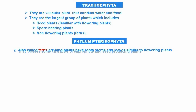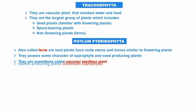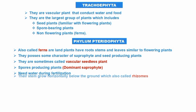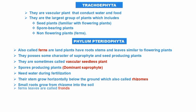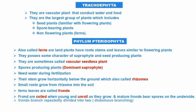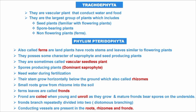The first subgroup is Pterophyta, also called ferns. Ferns are land plants with a root system and leaves similar to flowering plants. They possess some characteristics of sporophytes but are vascular seedless plants — they cannot produce seeds. Spore production is dominant in the sporophyte stage. They need water during fertilization. Their stems grow horizontally below the ground, called rhizomes, and small roots grow from the rhizomes into the soil. Fern leaves are called fronds — they are curled when young and bear spores on their underside. Fronds branch repeatedly, dividing into two.